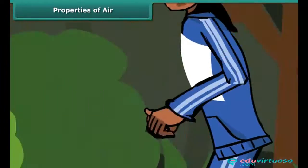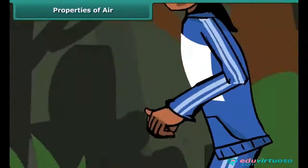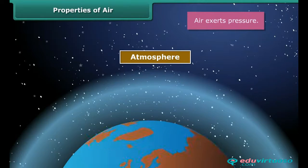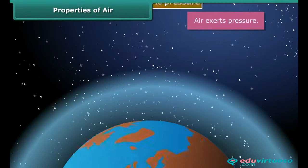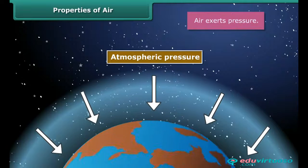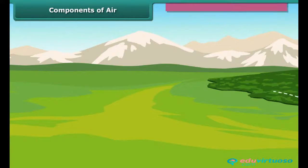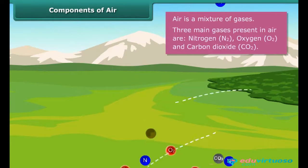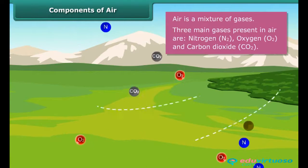Air surrounding the earth is called the atmosphere. The pressure exerted by the atmosphere is known as atmospheric pressure. Air becomes less dense at higher altitudes; therefore, the atmospheric pressure decreases as altitude increases. Air is a mixture of gases.